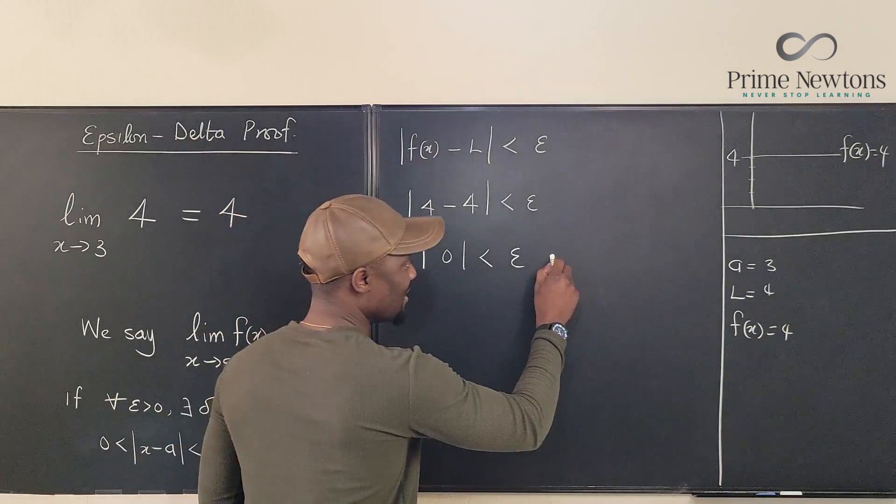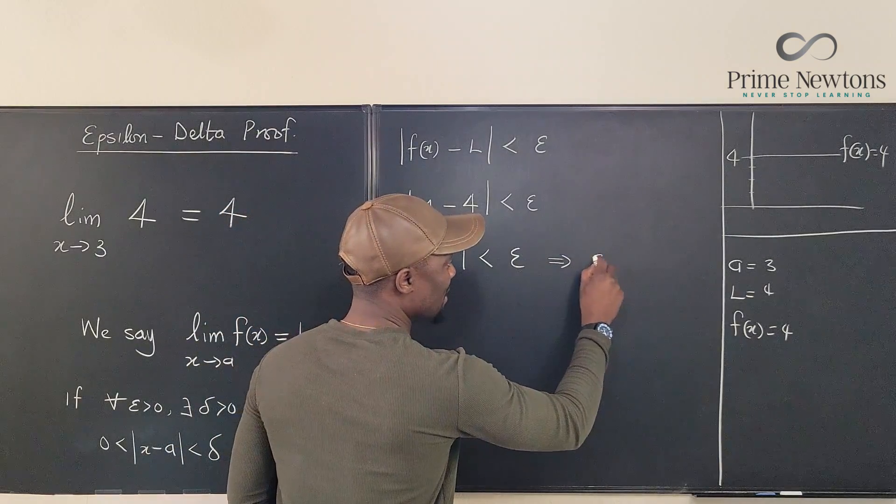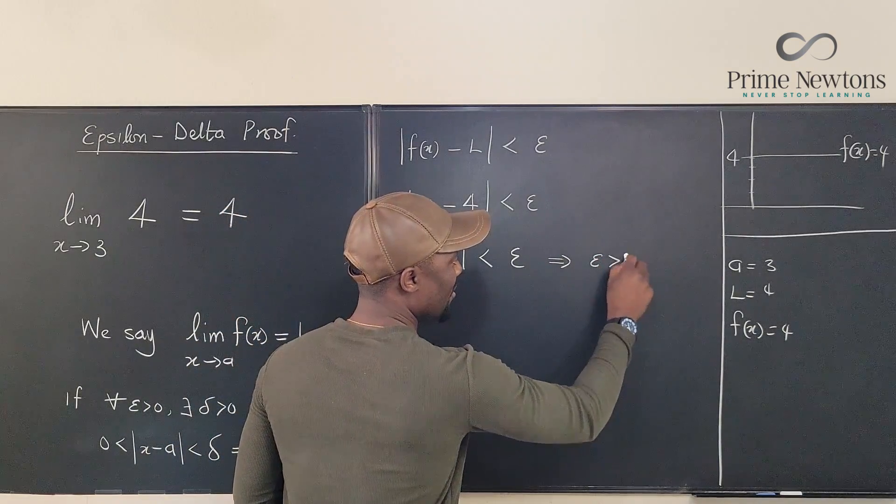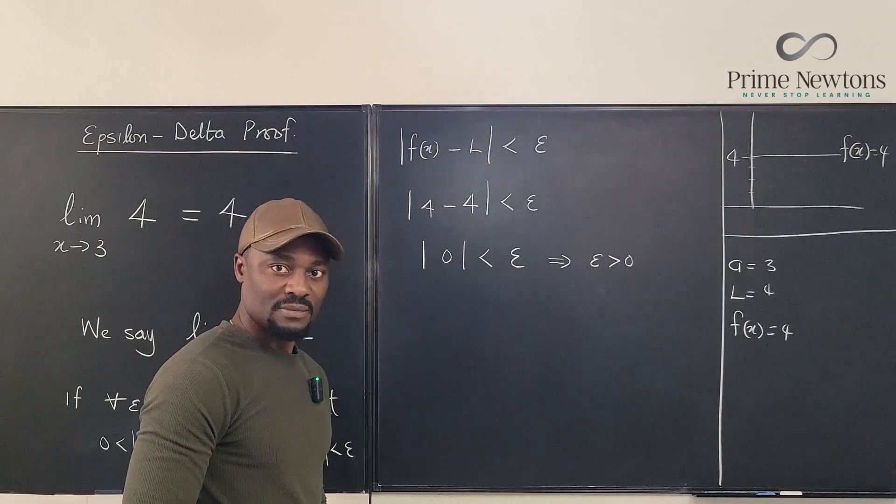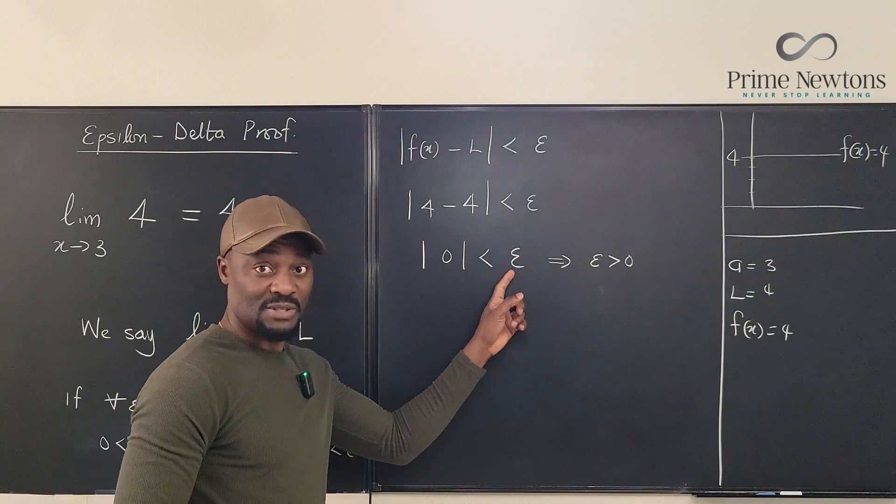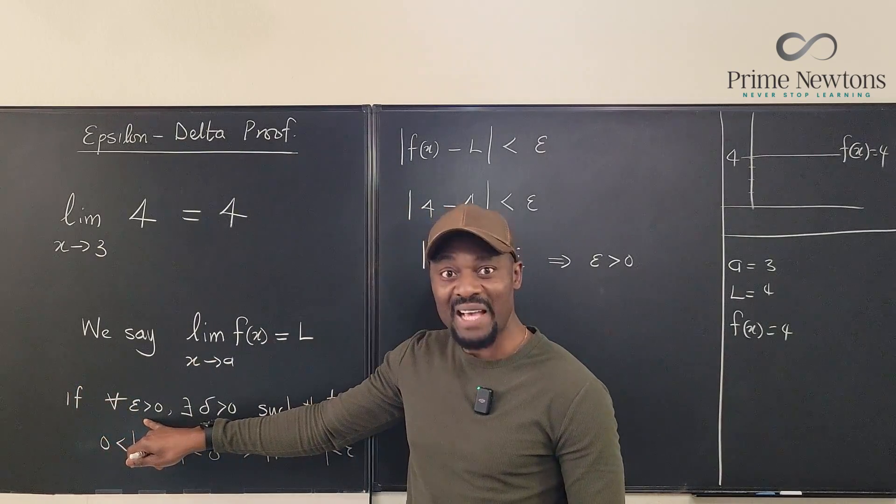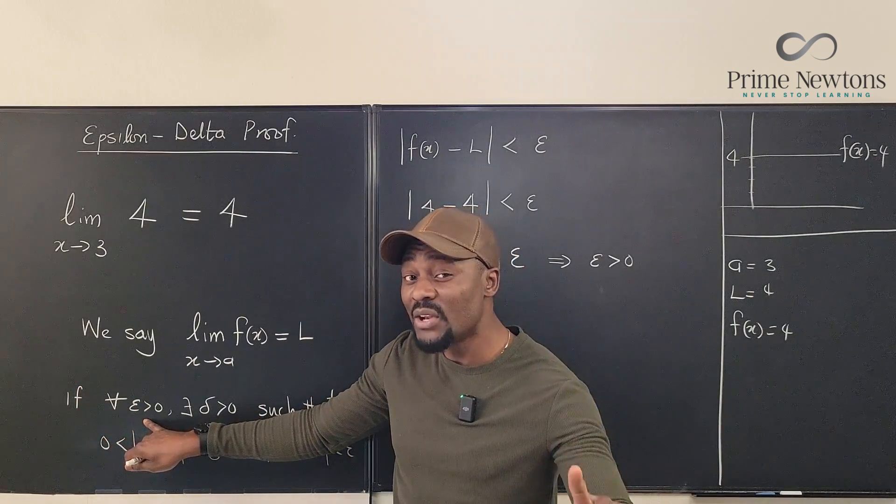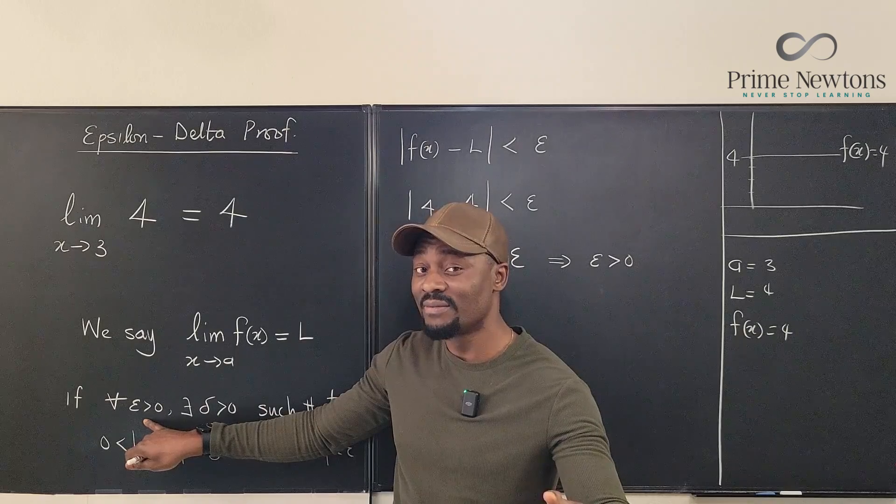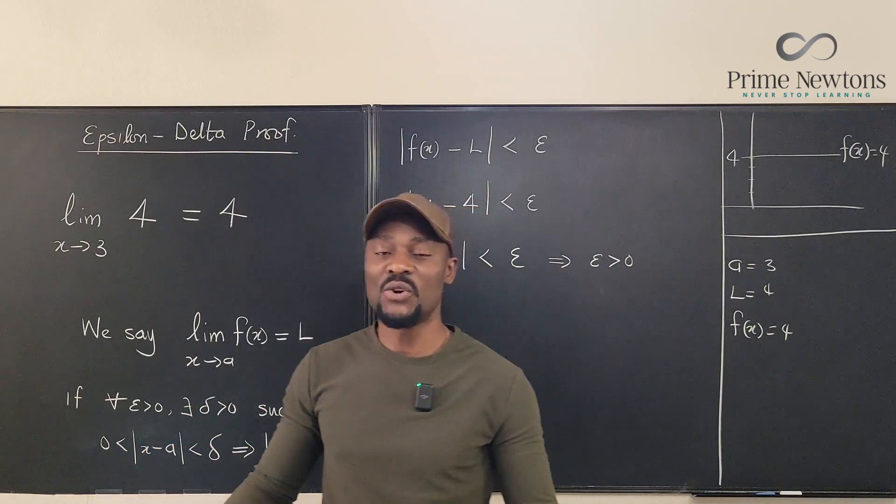Look at this sentence. This sentence implies that epsilon is greater than 0. 0 is less than epsilon implies epsilon is greater than 0, which brings us back here. For all epsilon greater than 0, there exists a delta greater than 0.